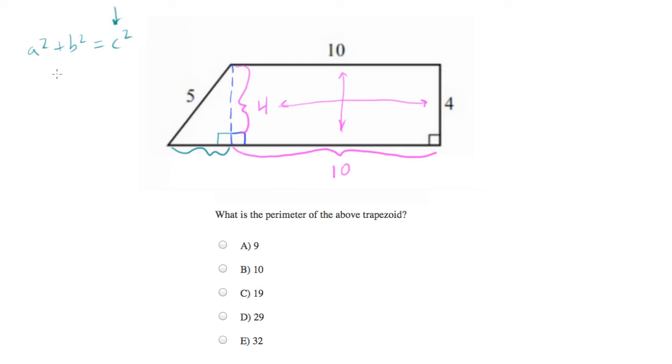So let's call this side that we don't know x—actually, I'm going to call that a to keep our formula the same. So a² plus b, in this case is 4², and c is 5².